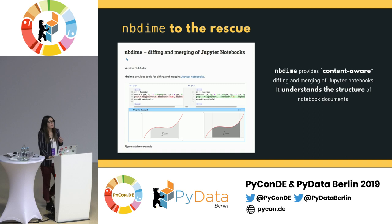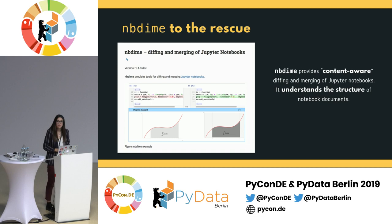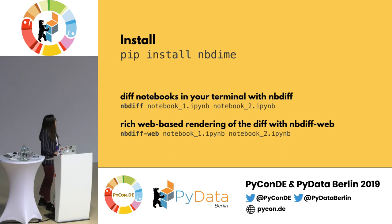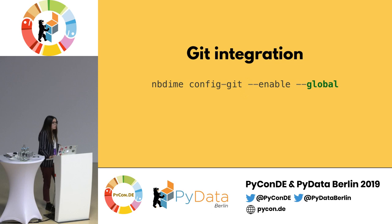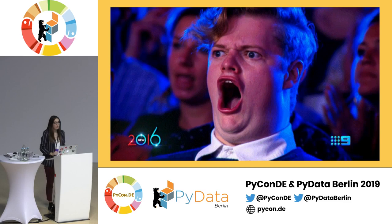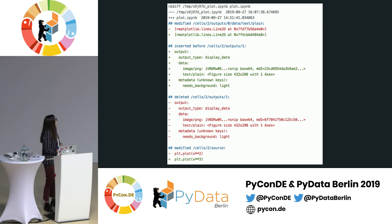The first tool I'm presenting today that will hopefully improve your life if you're working with Jupyter Notebooks is called NBDime. It provides content-aware diffing and merging of Jupyter Notebooks because it understands the structure of your JSON file. It's pip installable and provides two ways to diff your notebooks: in the terminal as usual, and also in the browser. The cool thing is that it fully integrates with Git, so you don't have to worry anymore.